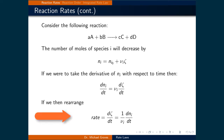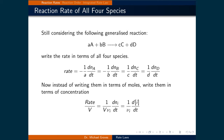If we solve for the rate, we get dζ/dt equal to (1/ν_i)(dn_i/dt). We can write an expression for the rate of change of all four components and relate them together, since they all share the same reaction rate. The rate equals −(1/a)(dn_A/dt) = −(1/b)(dn_B/dt) = (1/c)(dn_C/dt) = (1/d)(dn_D/dt). The negative signs are added explicitly because A and B are being consumed, while C and D are being produced.